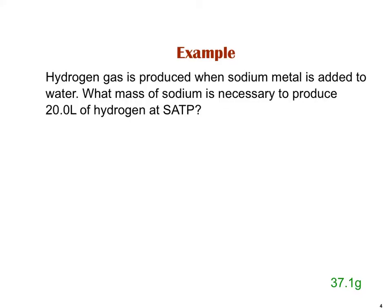Alright, last example here. Hydrogen gas is produced when sodium metal is added to water. What mass of sodium is necessary to produce 20 liters of hydrogen at SATP? This reaction is a little tricky. I wouldn't expect you to necessarily be able to do this on your own. So, I would give you: two sodium solids and two water molecules will react. I make two NaOH, now it's aqueous, and hydrogen gas.